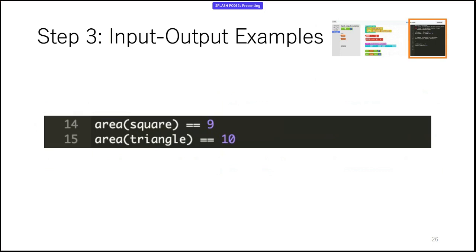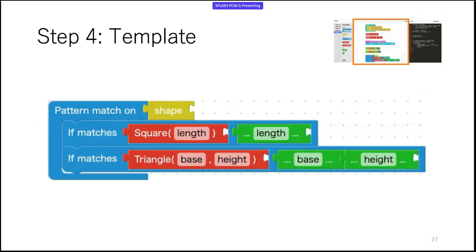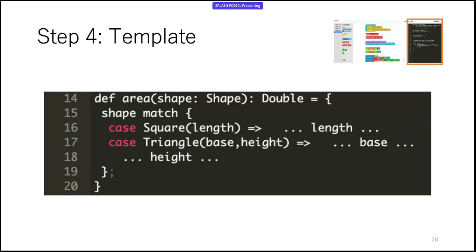Now we are left with the final step of the designing phase, which is template. A template tells us how the function processes its input without telling us how the function actually computes the output. In this case, the template is a pattern matching on the shape input. Since shape has two cases, the pattern matching has two clauses. On the right-hand side of each clause, we write the constructor arguments to remember that we are going to use these values to compute the final output. The Scala representation of the template looks like this. As we can see, this is not a proper Scala program due to the presence of dot-dot-dot.